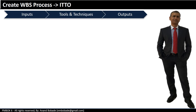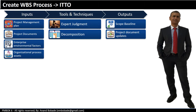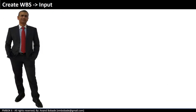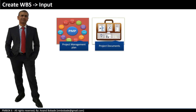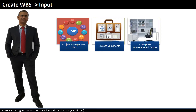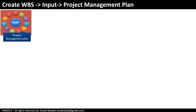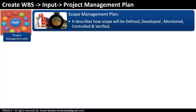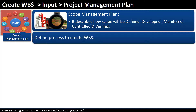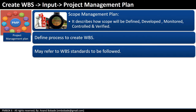Let's take a look at inputs, tools and techniques, and outputs. One of the key tools and techniques we are going to learn here is decomposition. The inputs are project management plan, project documents, enterprise environmental factors, and organizational process assets. The most important component of the project management plan that is input to this process is the scope management plan. It describes how scope will be defined, developed, monitored, controlled and verified, and it defines the process to create the work breakdown structure. It may also refer to WBS standards or rules used for decomposition.